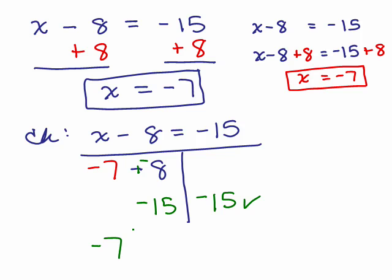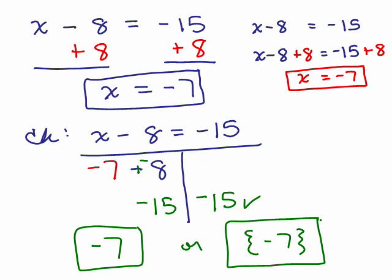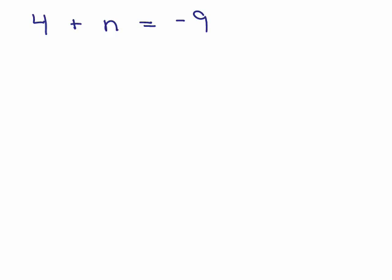So the answer to this is x = -7 is correct, so you could write the answer as -7, right? There's the answer, or if you want to be formal about it, you could use these little solution set braces, which means you've checked your answer.